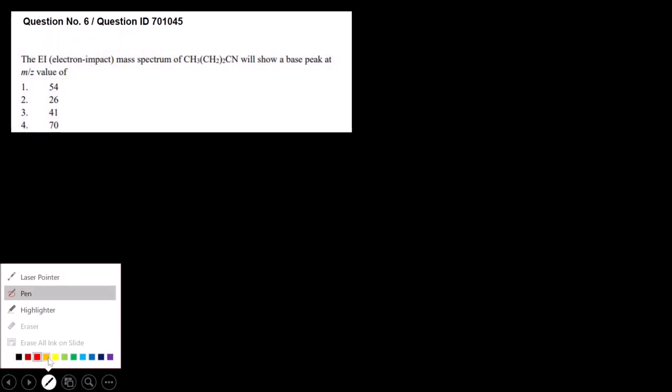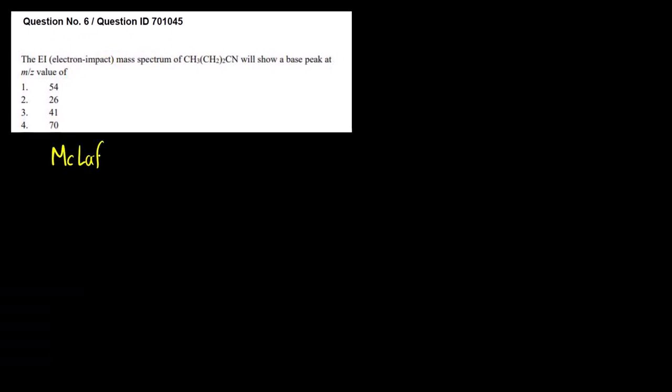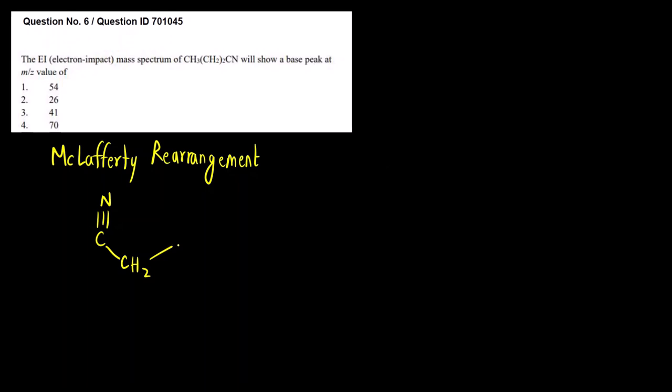Question 4: The EI mass spectrum of CH3CH2CH2CN will show a base peak at m/z = ? Always remember: when you see this type of question, it involves a McLafferty rearrangement. Let us draw the structure: N≡C–CH2–CH2–CH3.